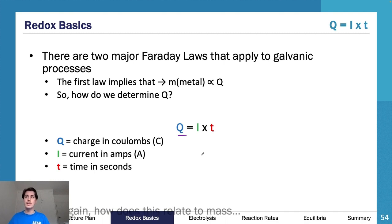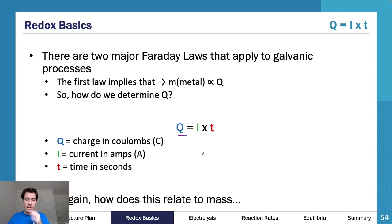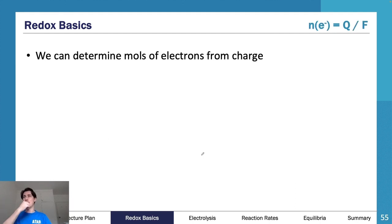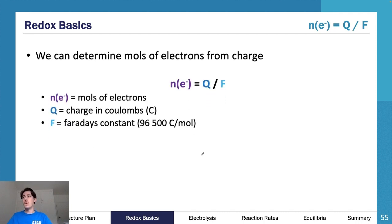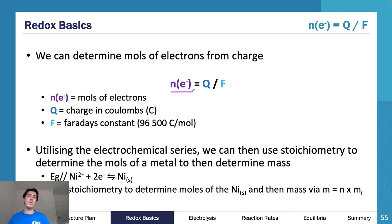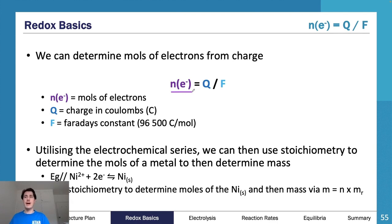So you've got Q = It — how does this relate to mass? We can determine the moles of electrons from charge: moles of electrons equals charge over Faraday's constant. If we know the moles of electrons, we can then use stoichiometric ratios to determine the moles of a product, like solid nickel, and from there determine the mass.